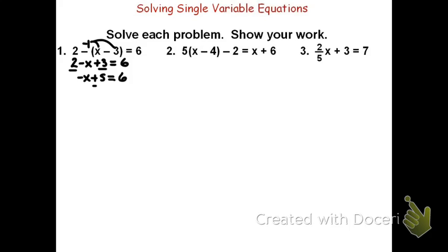To get the x by itself, I need to go ahead and subtract 5. If I do that from one side, I do it to both to maintain the equality. And this leaves me negative x equals 1. We're almost done. It's not quite isolated yet for the variable because it's negative x. That's like having a negative 1x.